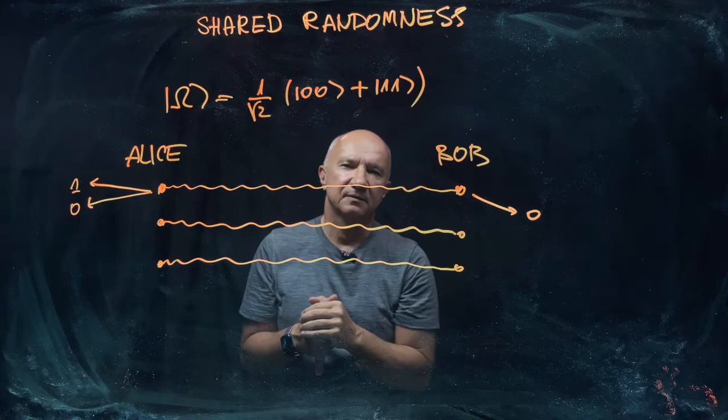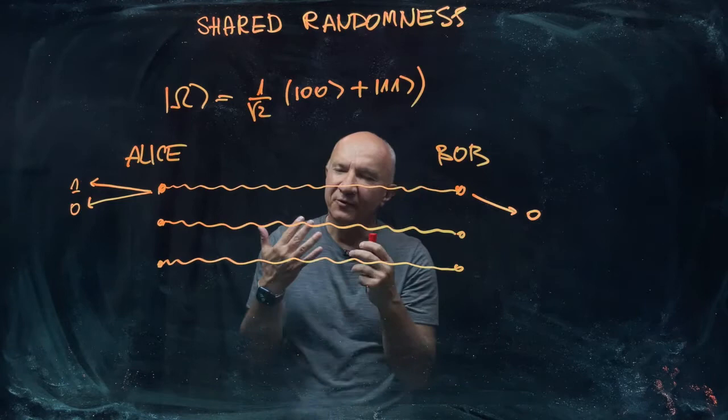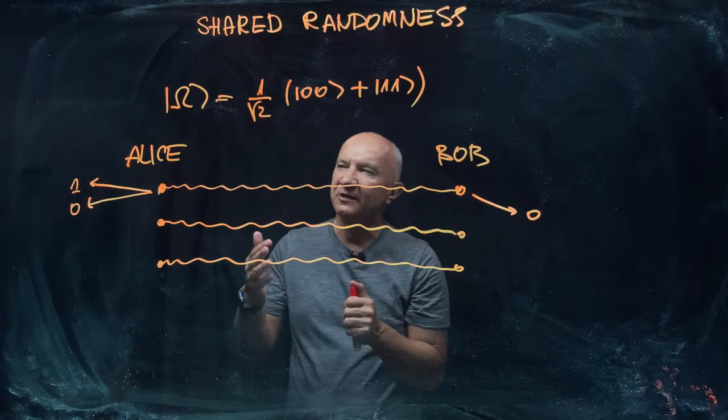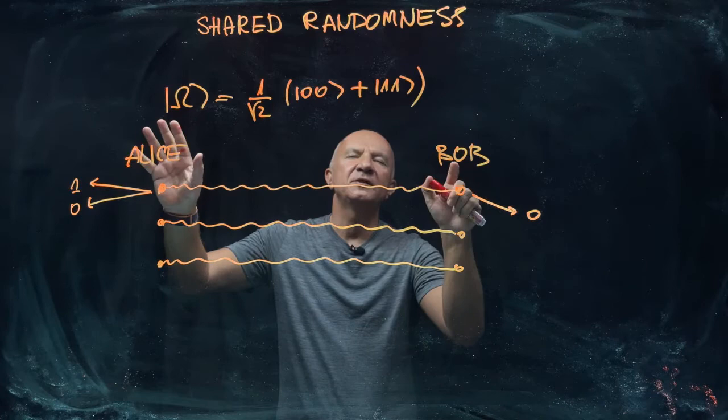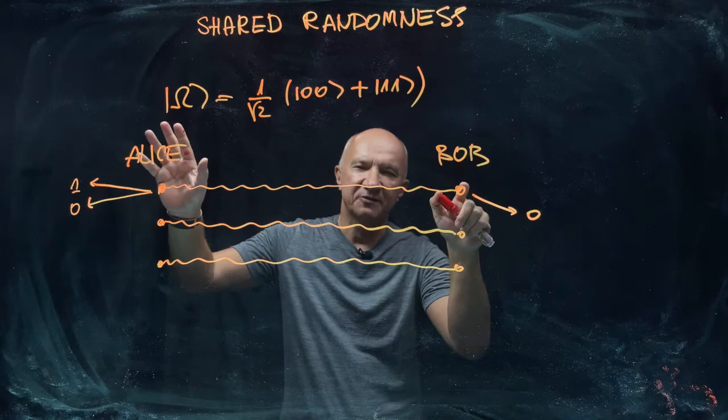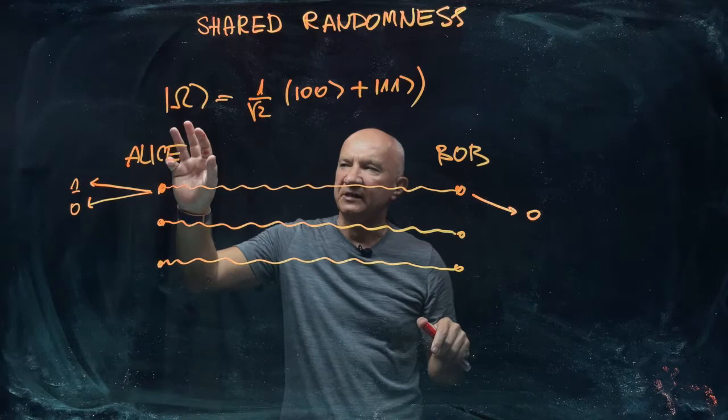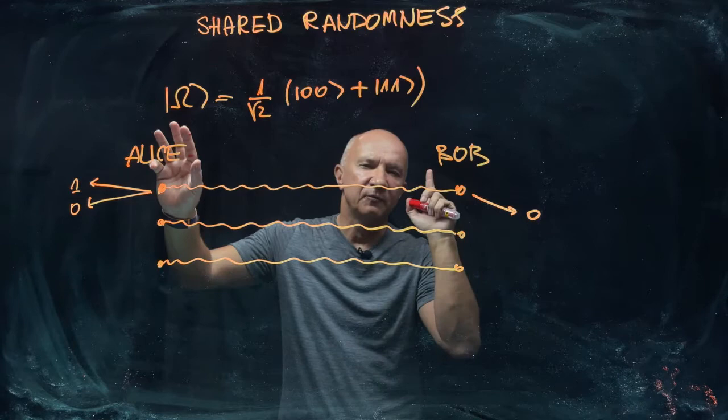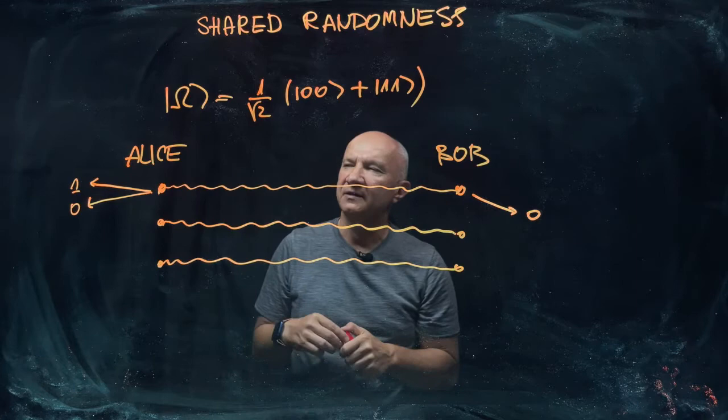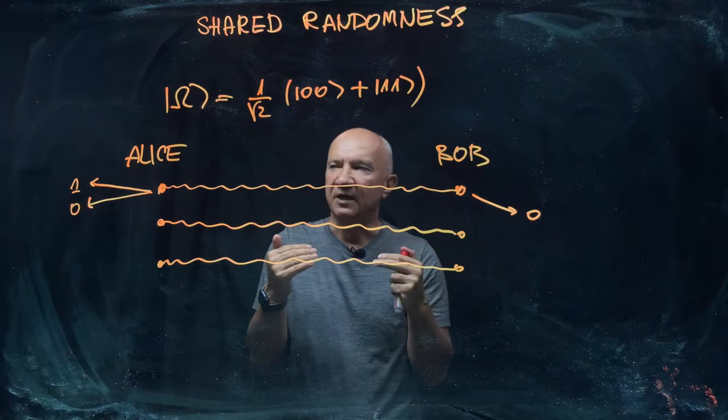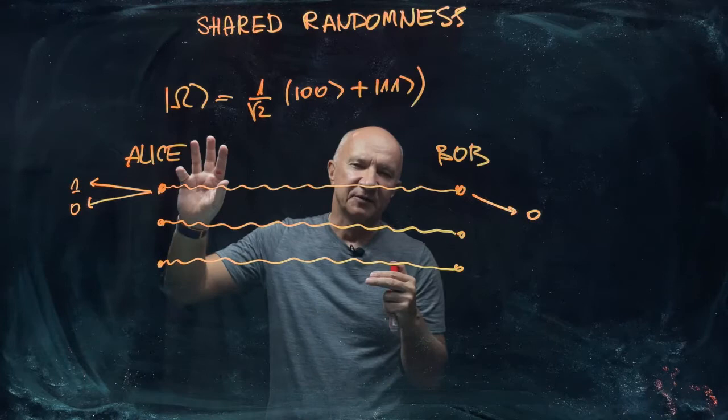But you should realize that this is not helping you with any instantaneous communication, simply because Alice, even though after performing the measurement, she knows immediately what will be the outcome of the measurement if Bob performs the measurement in the computational basis. So Alice knows that if she sees zero, if Bob measures the same bit value on his qubit, he will certainly get zero. And so there is a perfect correlation here, but this perfect correlation doesn't imply instantaneous communication because Alice doesn't have influence on what she's going to see when she performs her measurement.